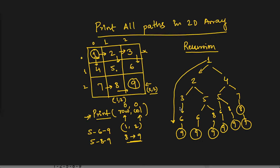The paths are: 1,2,3,6,9 — 1,2,5,6,9 — 1,2,5,8,9 and so on. In the recursive function, we will start with 0,0 which is 1. Importantly, we will have a variable called 'path' which will store all the cells we have already traversed. So we will add one more parameter to our recursive function called 'path'. When we are starting, the path will have 1. Now we will make a recursive call to 2 and 4.